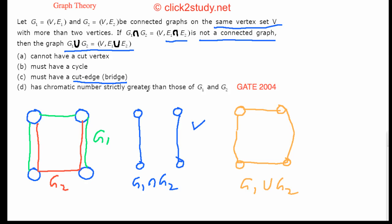In G1 ∪ G2, can you find an edge whose removal disconnects the graph? No — removing any single edge still leaves the graph connected. So we can eliminate option C. For option D, the chromatic number of G1 ∪ G2 must be strictly greater than those of G1 and G2. In this example, G1 and G2 are both trees.